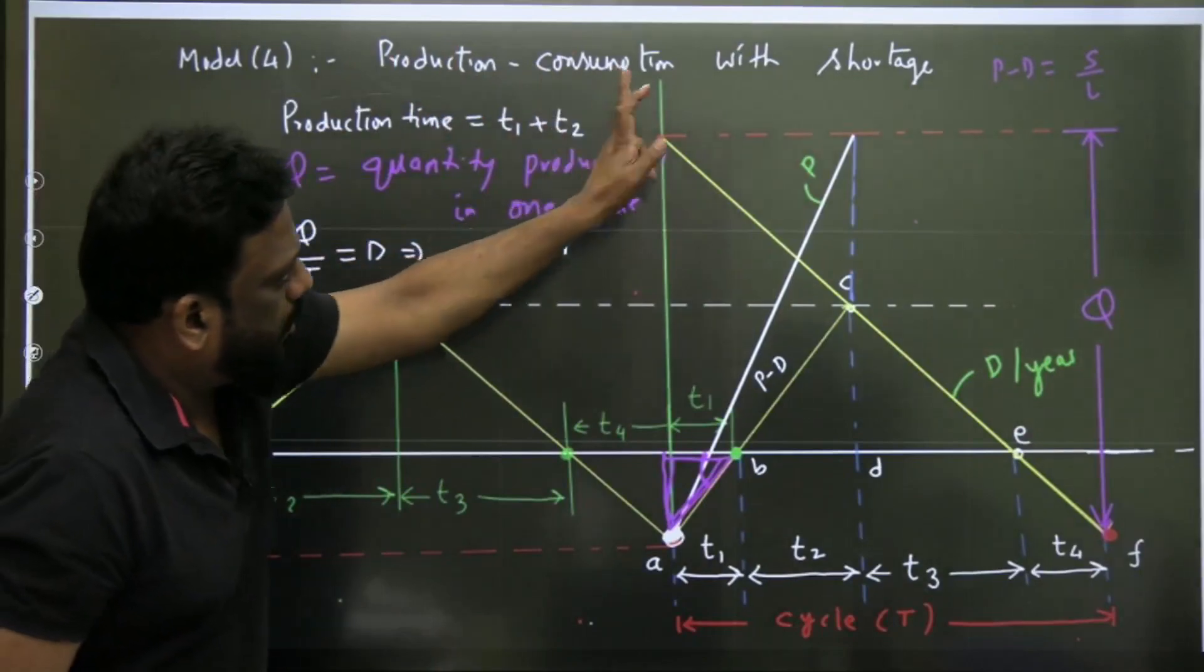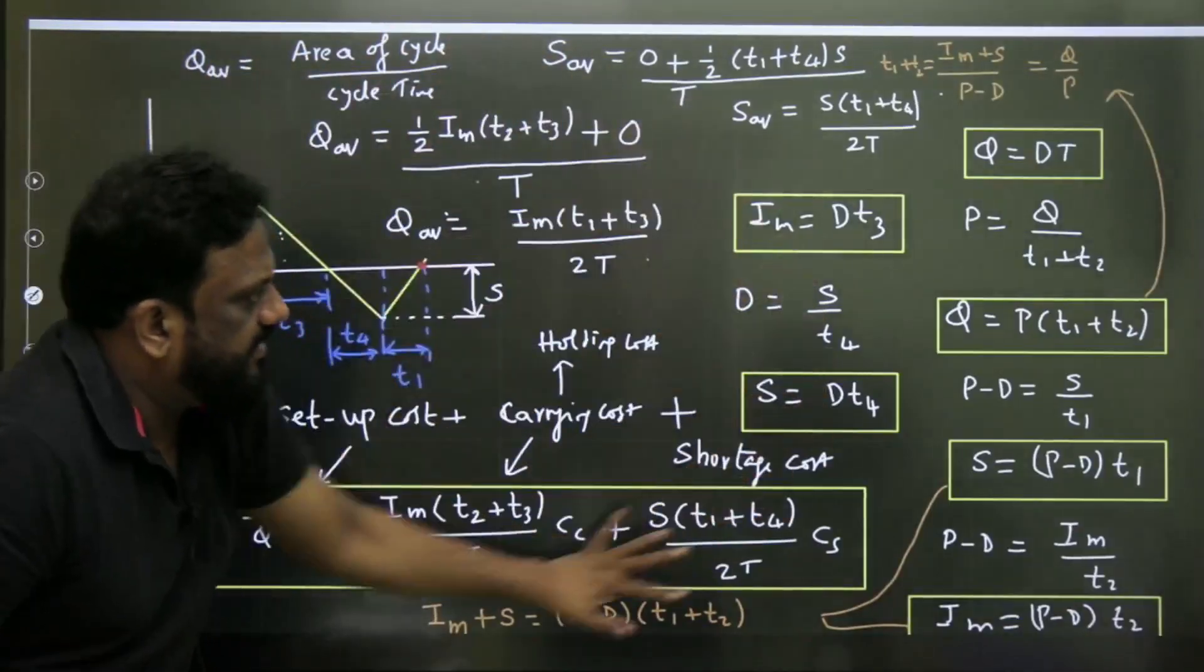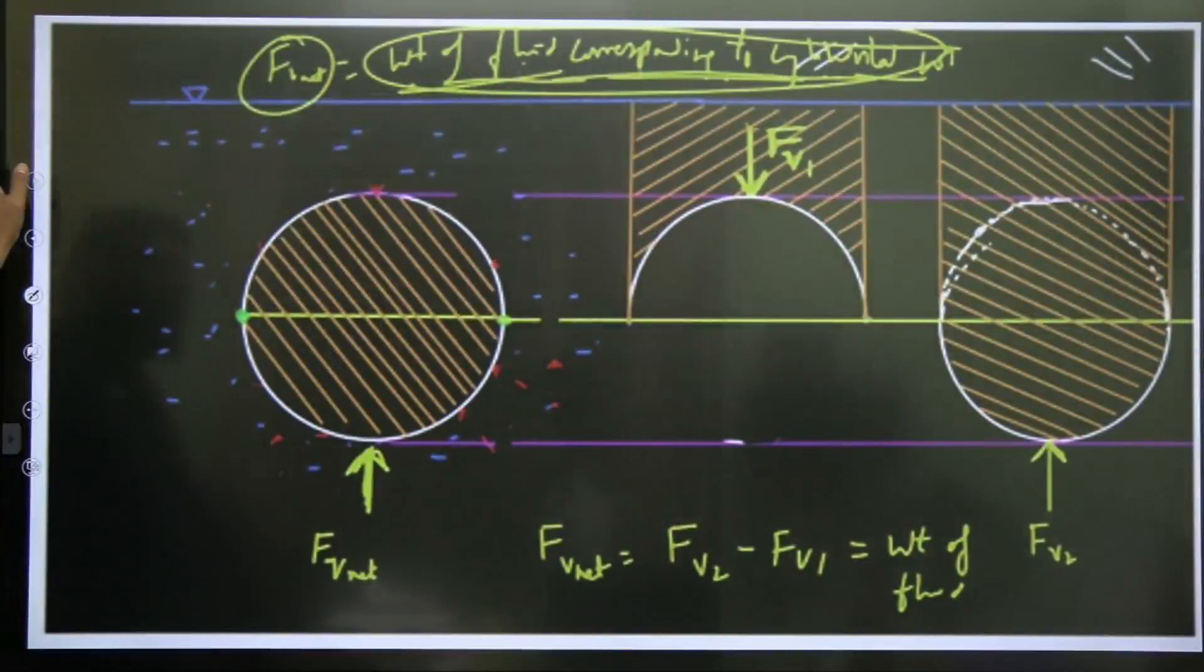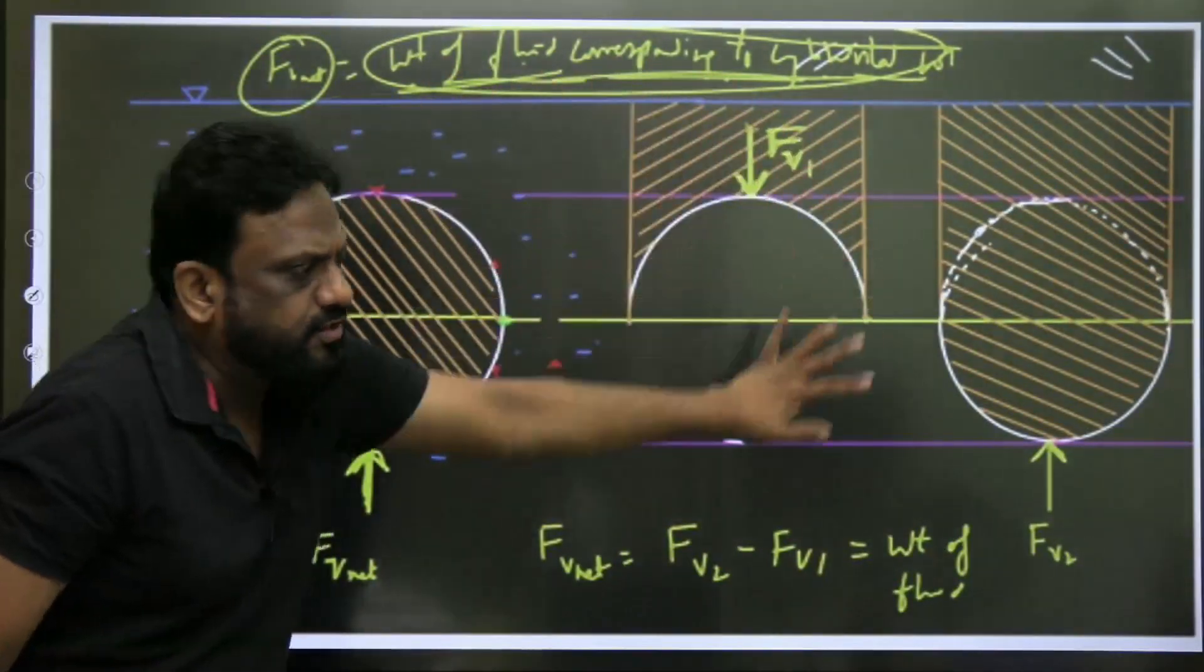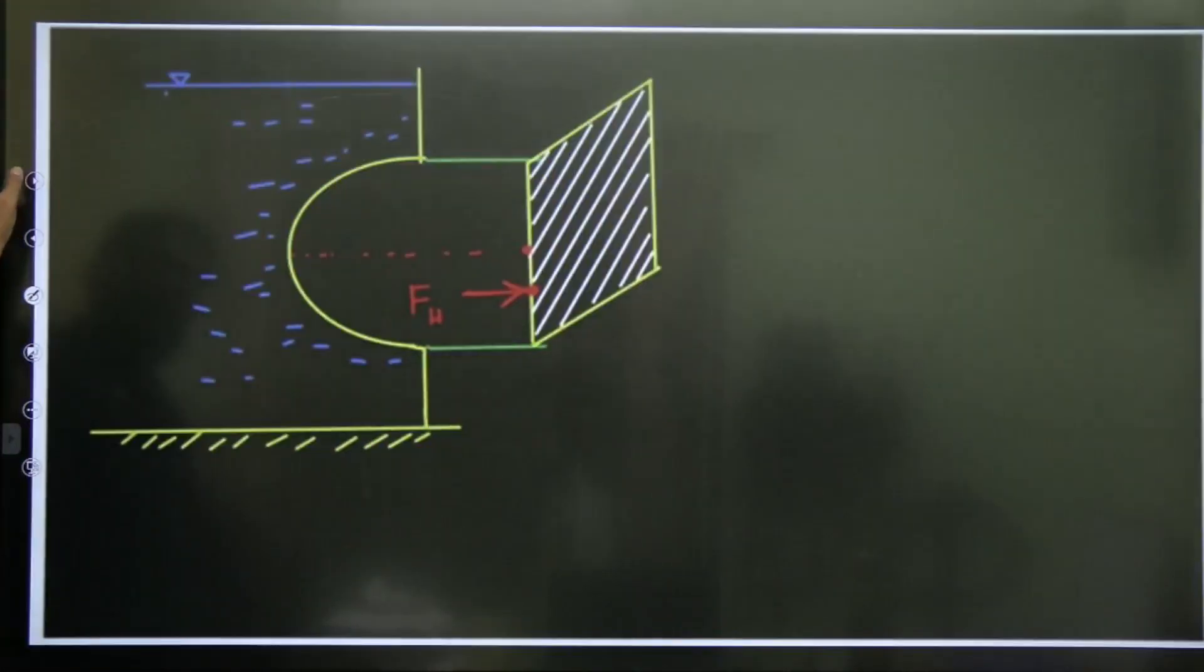This is from industrial engineering and the derivation was done. Production consumption model with shortages beautifully. Complete derivation is given. Then we have fluid mechanics, that is forces on curved surfaces, forces on curved surfaces done again beautifully.